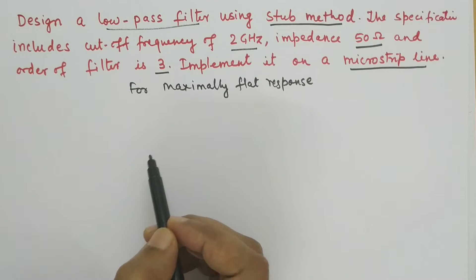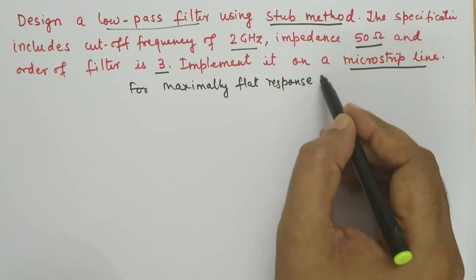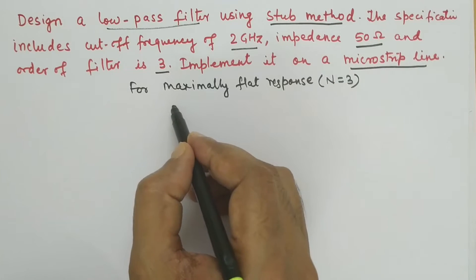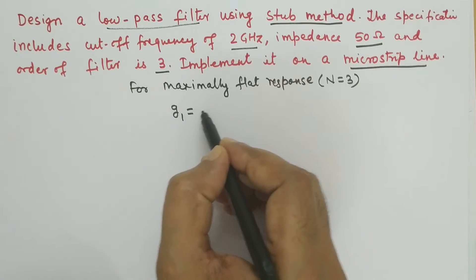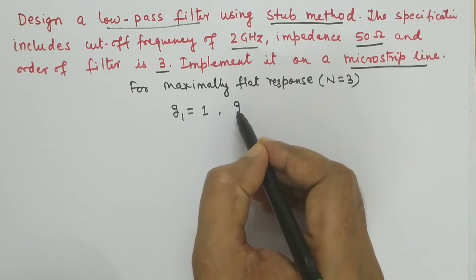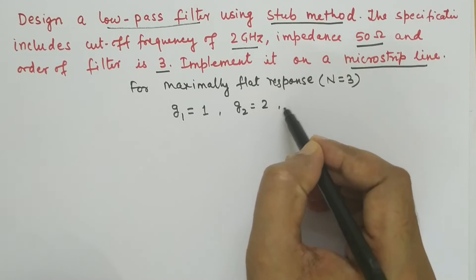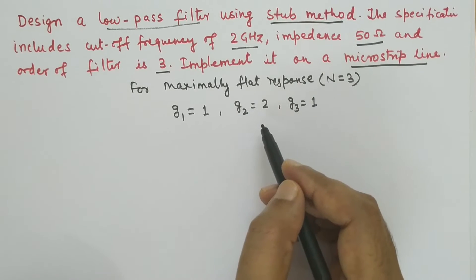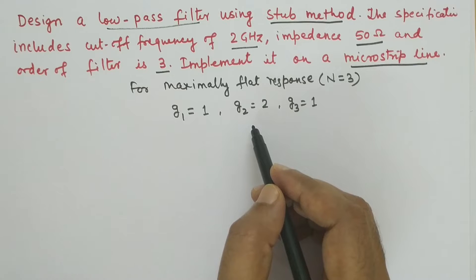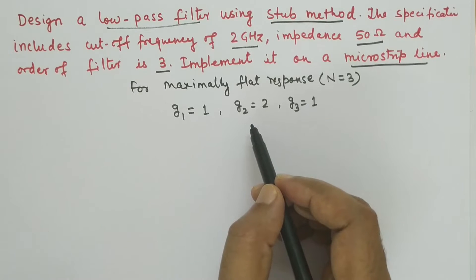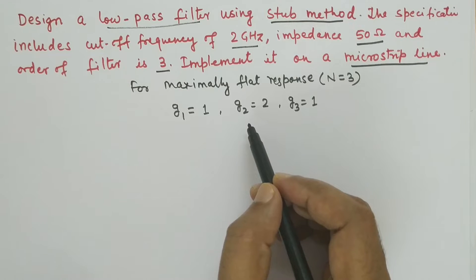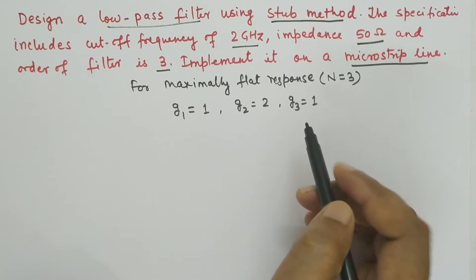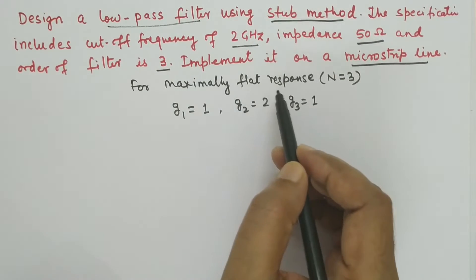As we know that for maximally flat response having order n equal to 3, the element values are given as g1 equal to 1, g2 equal to 2, and g3 equal to 1. These can be calculated using the formula discussed in the previous video, or you can use a table which gives all these values for different orders of filters for maximally flat response.